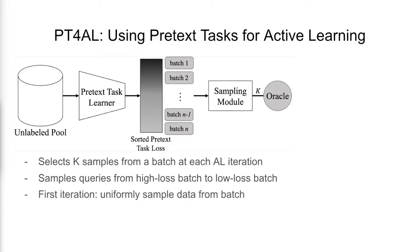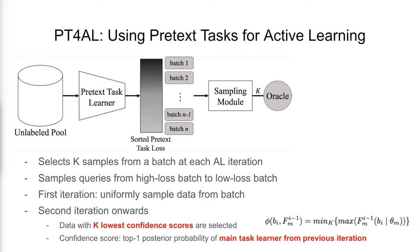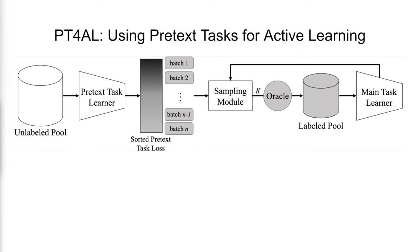In the first iteration, data are uniformly sampled from the first batch. From the second iteration onwards, data with the k lowest confidence scores are selected. Here, the confidence score is the top one posterior probability of the main task learner from the previous iteration. The sampled data are then labeled by the oracle and added to the labeled pool. The main task learner is then trained with the labeled data.